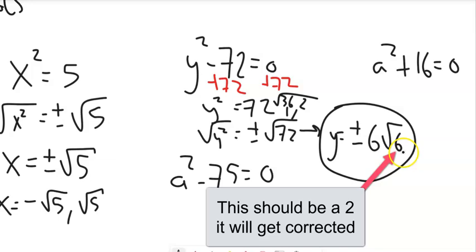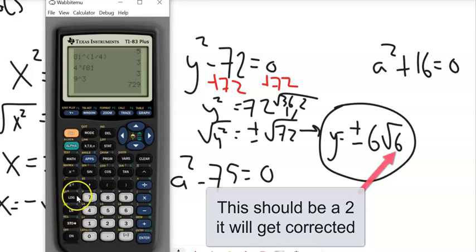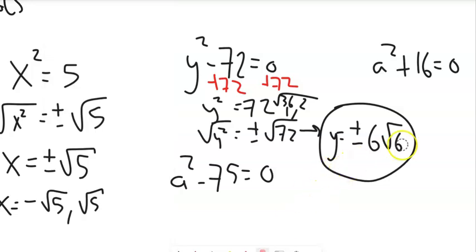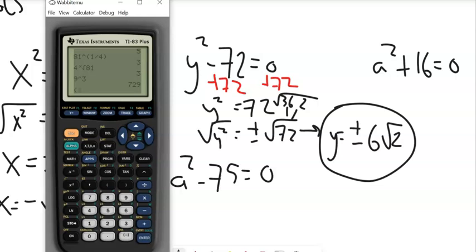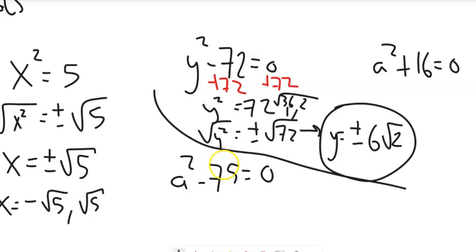These are easy to check — take that number and plug it back in using your calculator. If you're not sure if you're right, check it. So I'll verify: 6 root 2, putting that whole thing in parentheses because I'm going to square it, and then subtracting 72 from that — it should give me 0. And it does. Now let's do the next one. Same idea — add 75 to both sides, then square root both sides. Plus or minus comes with it, so A equals plus or minus root 75. That reduces to 25 times 3, so the answer is plus or minus 5 root 3.